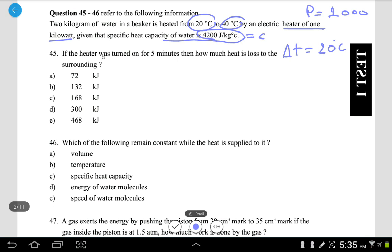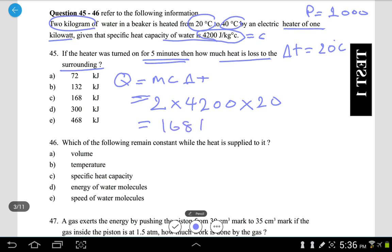Now the question says if the heater was turned on for 5 minutes, how much heat is lost to the surrounding? So first, we would like to find heat supply. So I'll go with Q equals MC delta T. Mass here is 2 kilograms, so go with 2. C here is 4,200. Delta T is 20. If I multiply all this out, I'm getting 168 kilojoules.